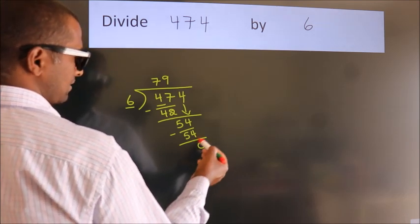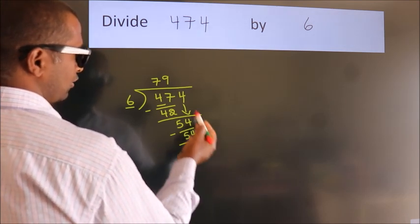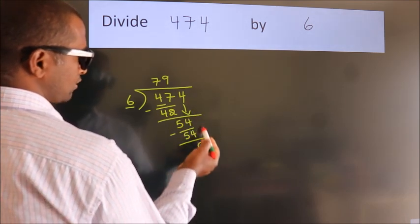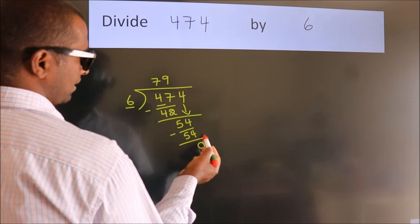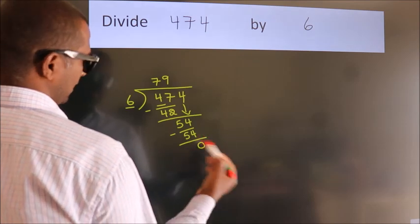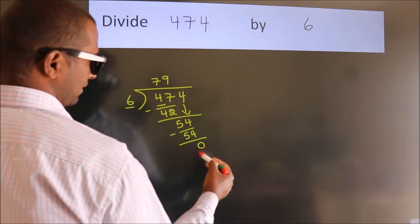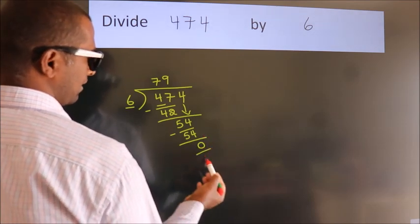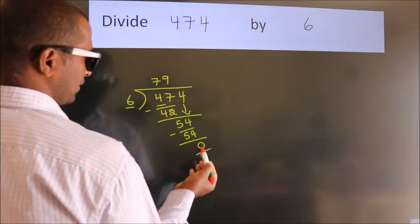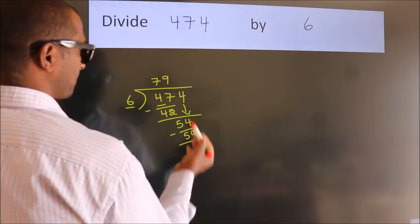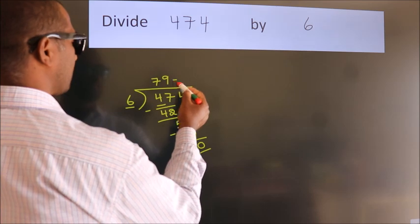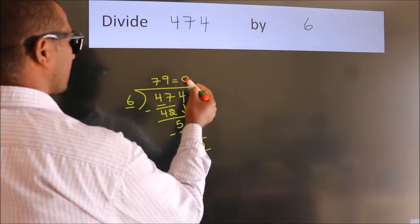After this, there are no more numbers to bring down, and we got remainder 0. So this is our quotient.